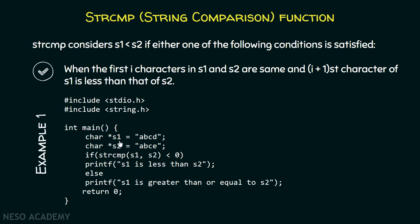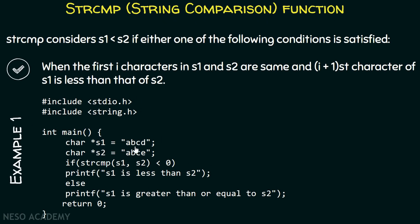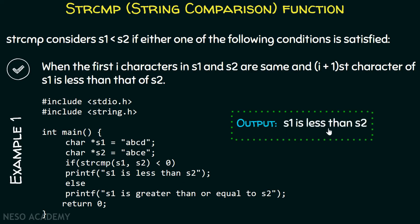For example, s1 points to the string 'abcd' and s2 points to 'abce'. Comparing these two strings, the first three characters match. The fourth character differs: d in s1 versus e in s2. Since d is less than e, s1 is less than s2. strcmp returns an integer less than zero, so we print 's1 is less than s2'.